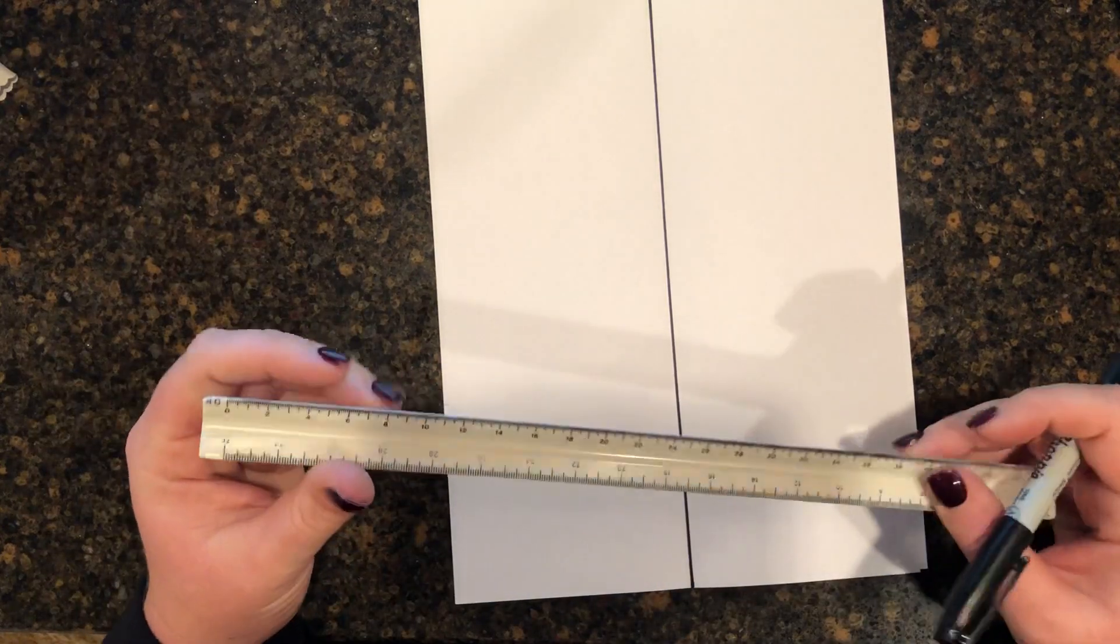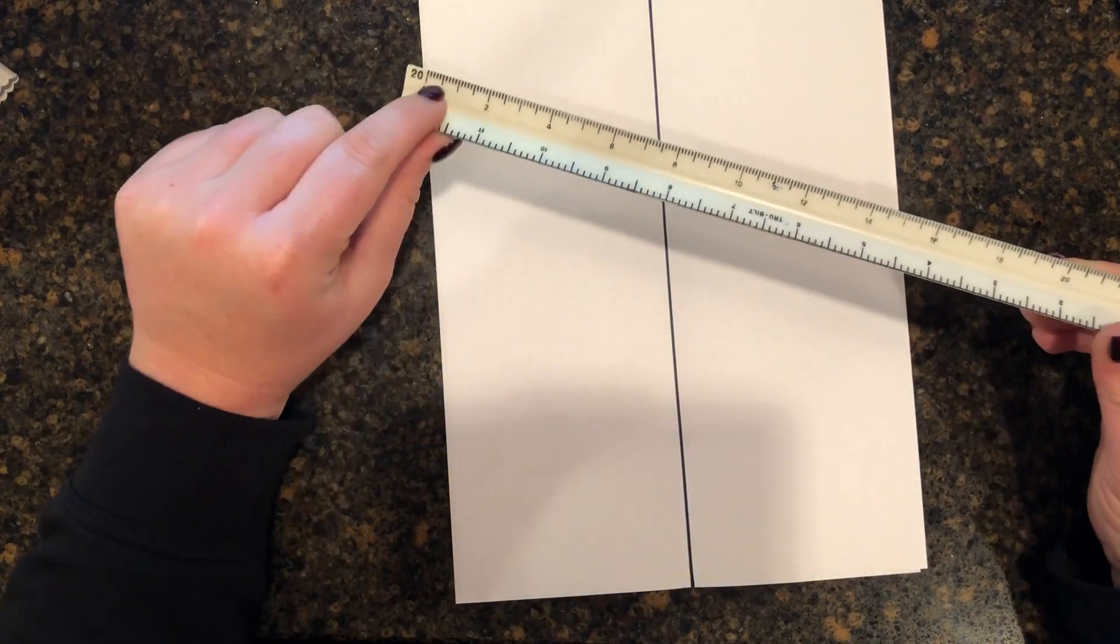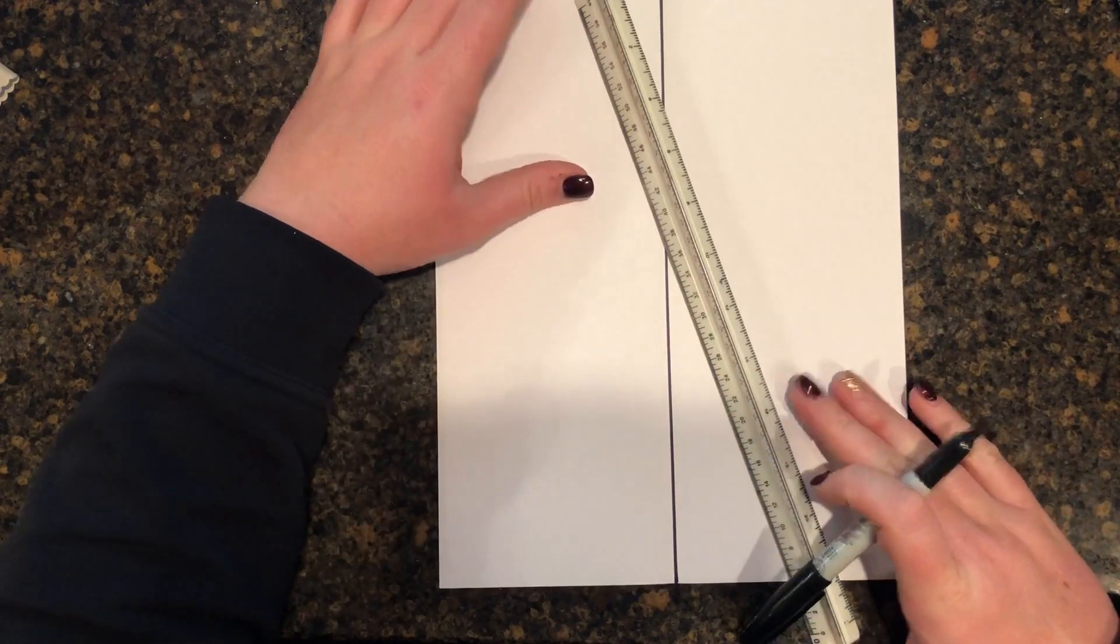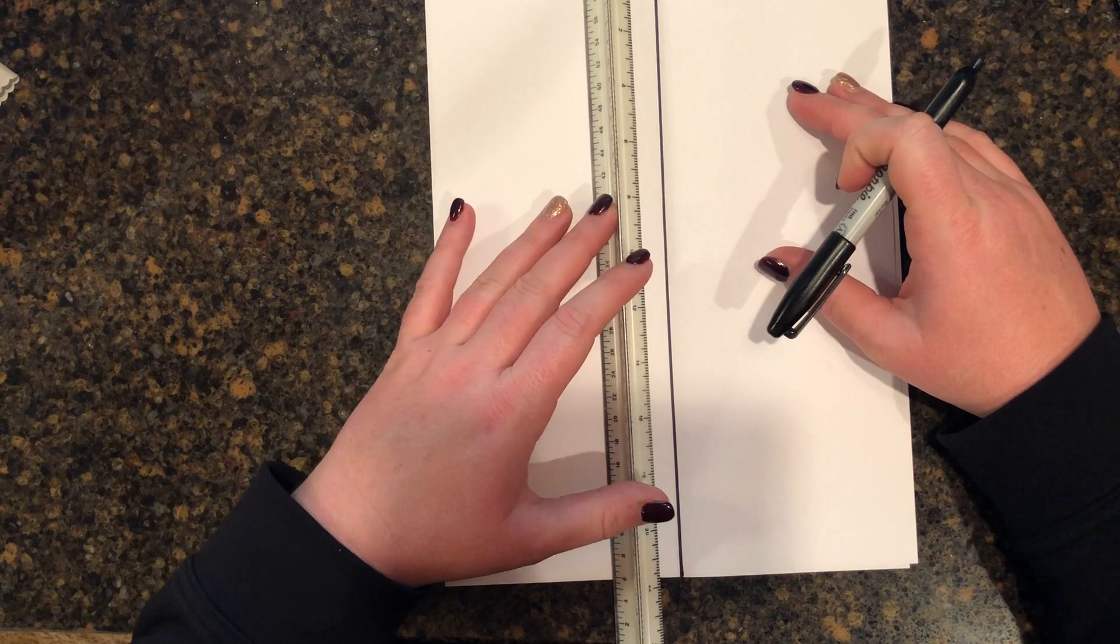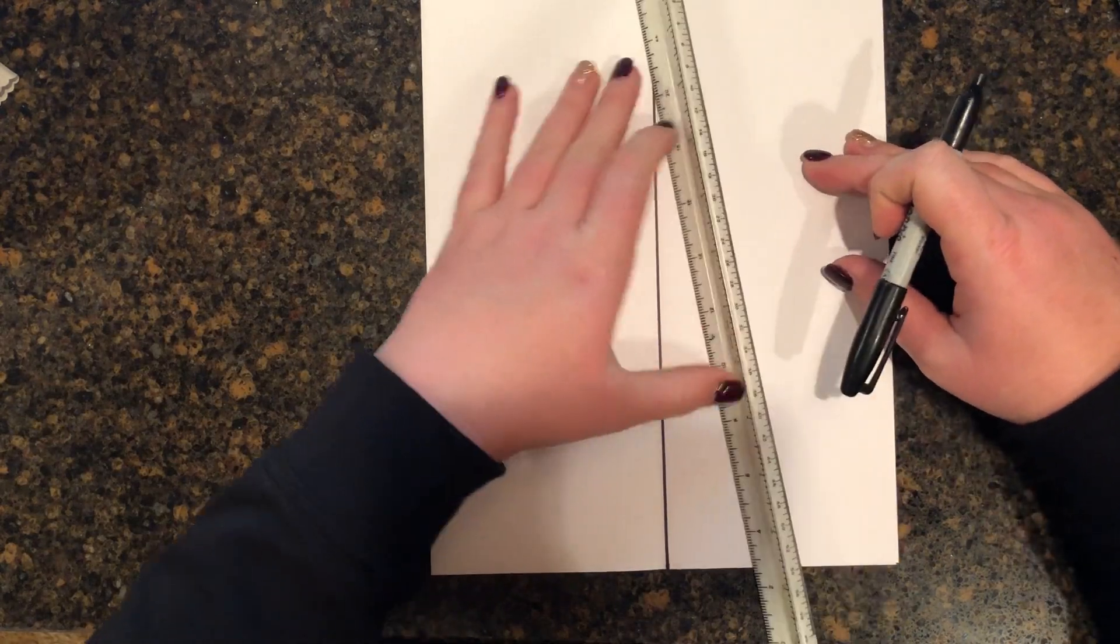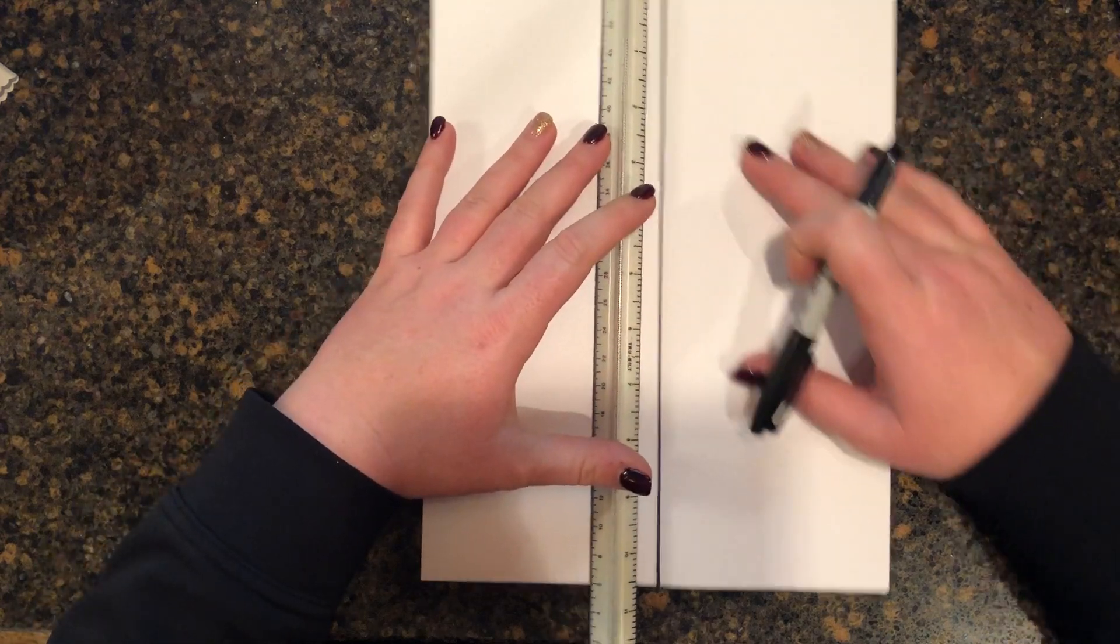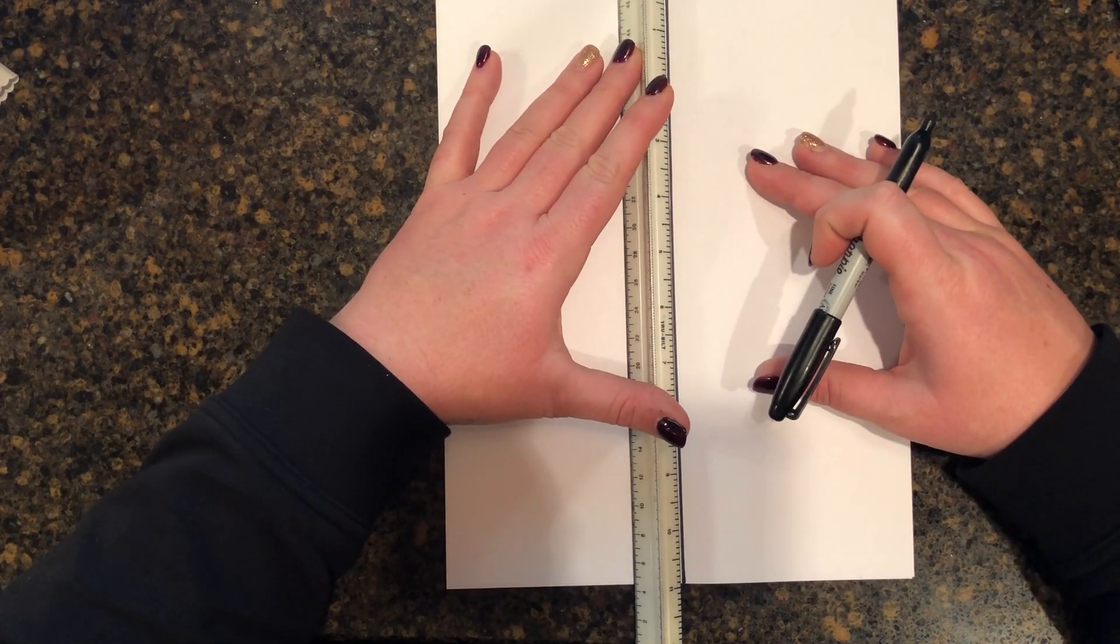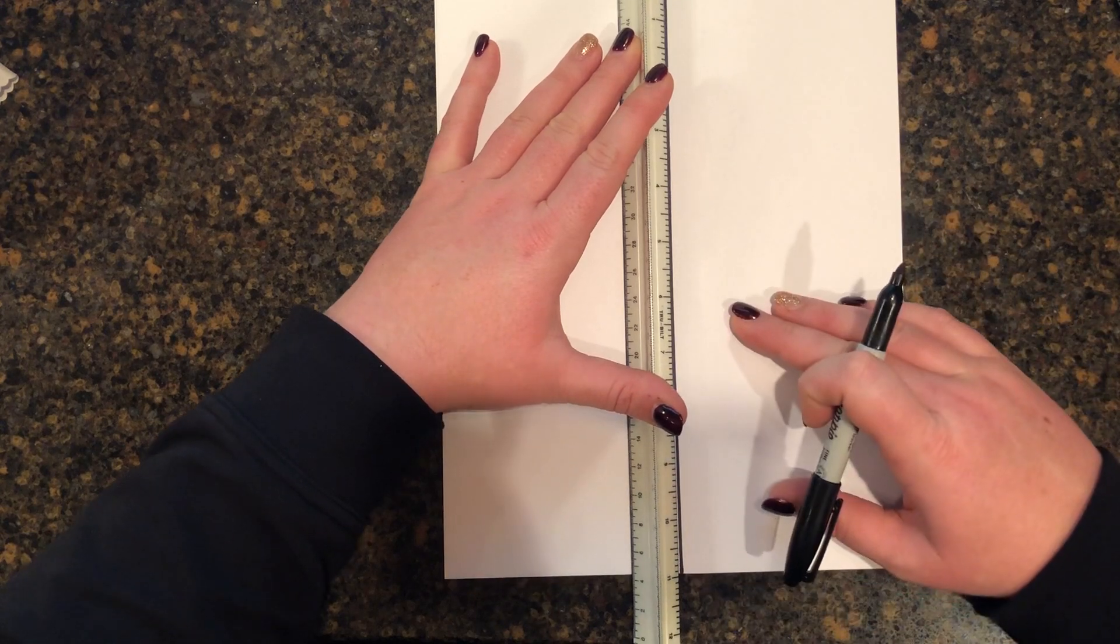Now what I'm gonna do is take my ruler and find my inch markings, and I'm gonna line up the zero to the very top of the page. So there's my inch markings right there. I'm gonna find my zero and take it to the very top of the page, and then I'm gonna just make sure that I can see my whole timeline as I go down through my ruler.